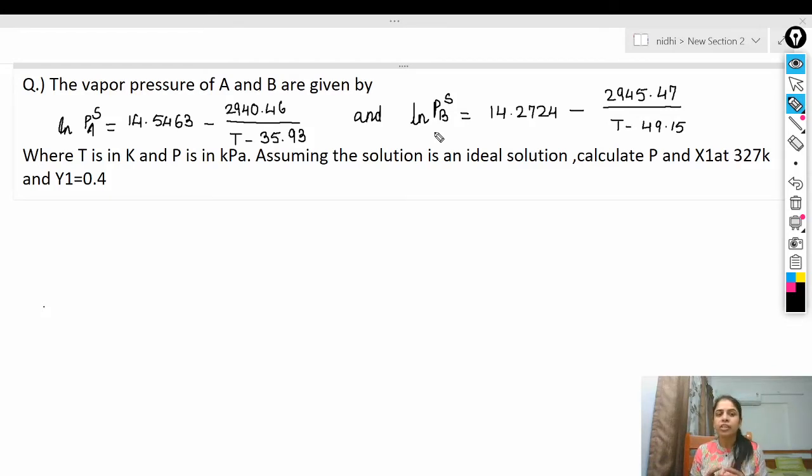The Antoine equation for vapor pressure is given as: ln(P_A^s) = 14.5463 - 2940.46/(T - 35.93) and ln(P_B^s) = 14.2724 - 2945.47/(T - 49.15), where T is in Kelvin and P is in kilopascal.